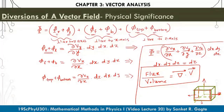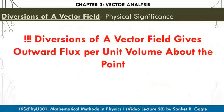So the physical significance of divergence is: the divergence of a vector field at a given point gives the outward flux per unit volume from an infinitesimally small volume centered at that point.